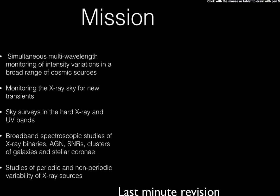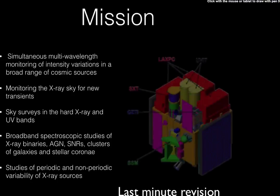The missions of AstroSat include: multi-wavelength monitoring of intensity variation in a broad range of cosmic sources; monitoring the X-ray sky for new transients; sky surveys in the hard X-ray and UV bands; broadband spectroscopic studies of X-ray binaries, AGN, SNR, clusters of galaxies, and stellar coronae; and studies of periodic and non-periodic variability of X-ray sources.